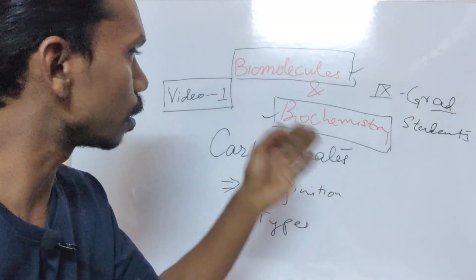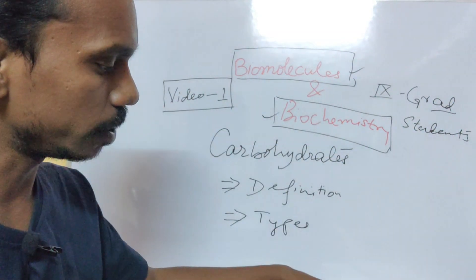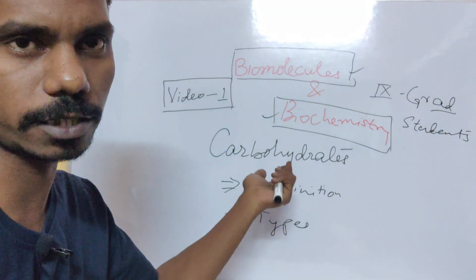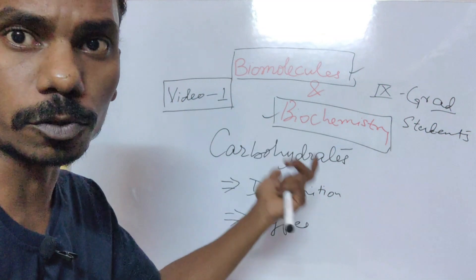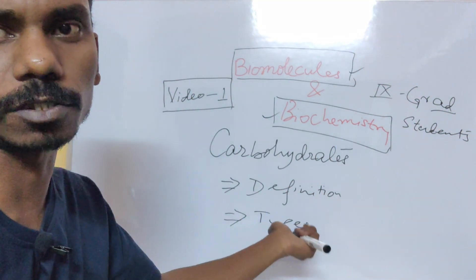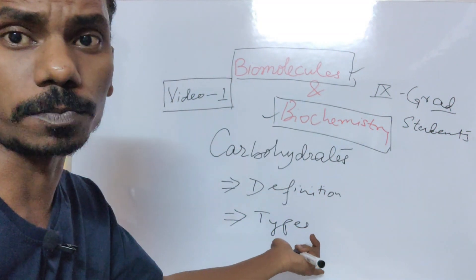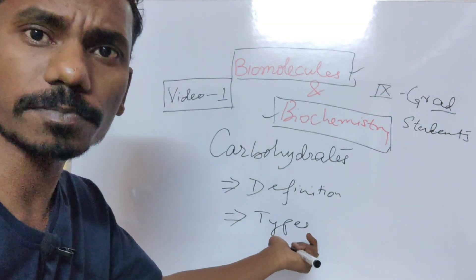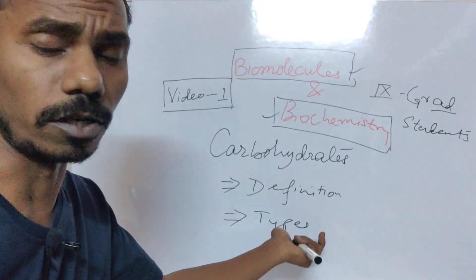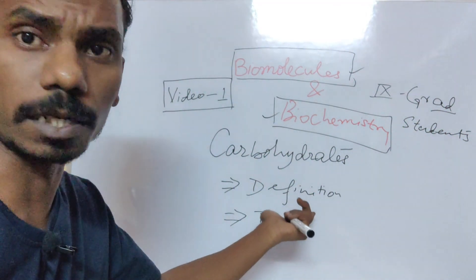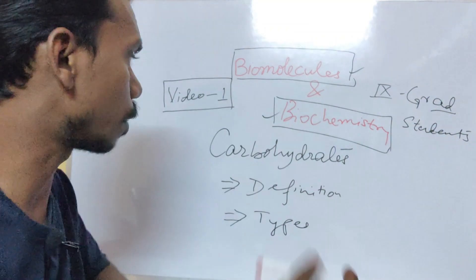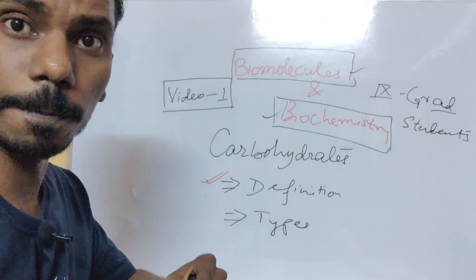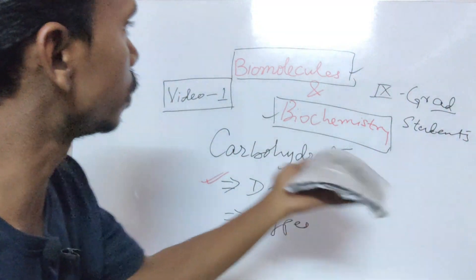Let's start with the topic carbohydrate. Today we will be discussing about carbohydrates — their definition, types, different isomers, different structures and all. So basically today we will be learning about the definition of carbohydrate only. Let's jump to carbohydrate.